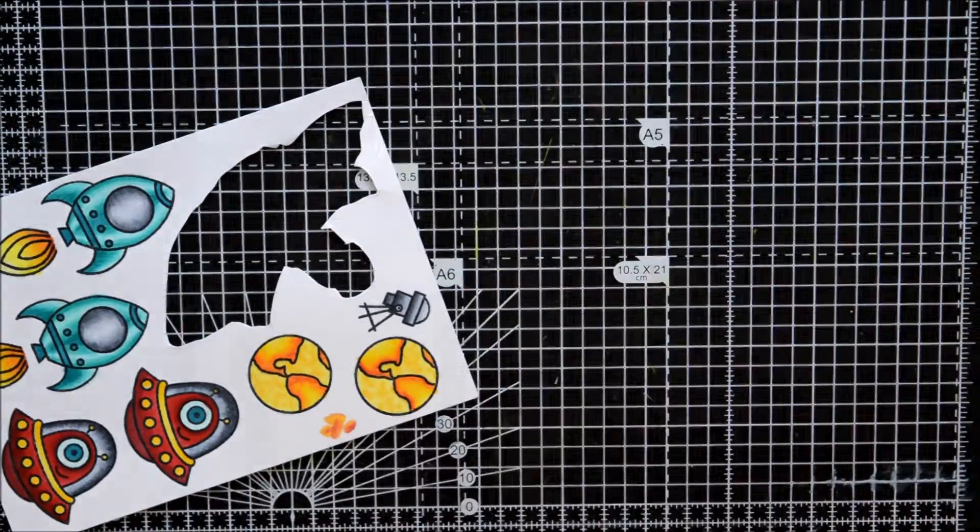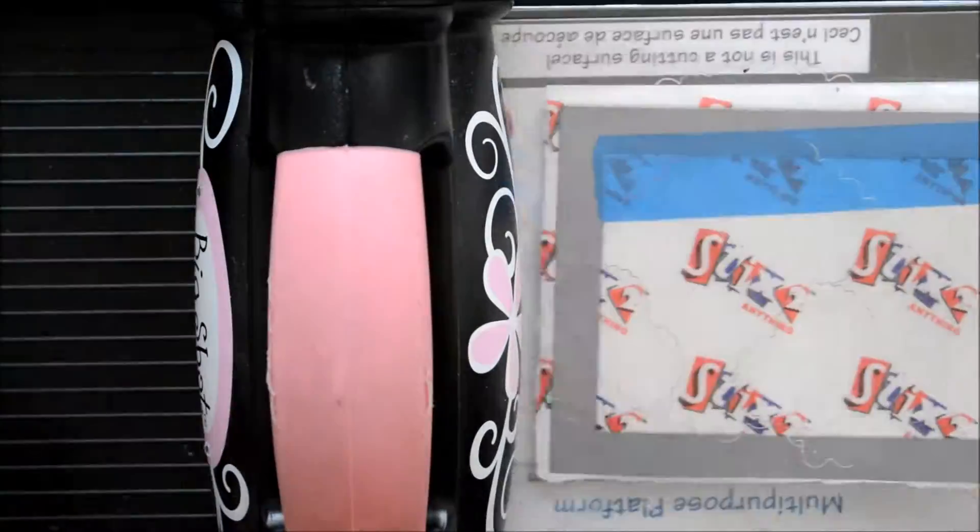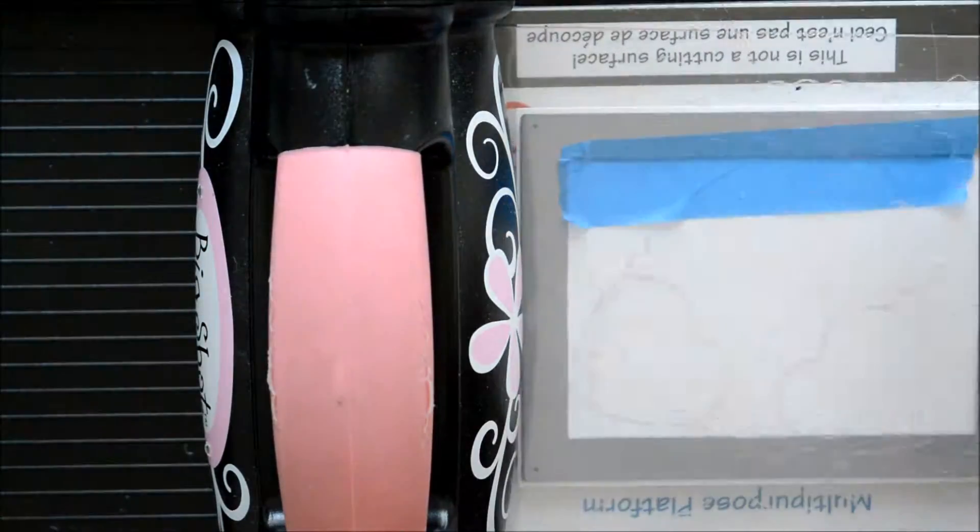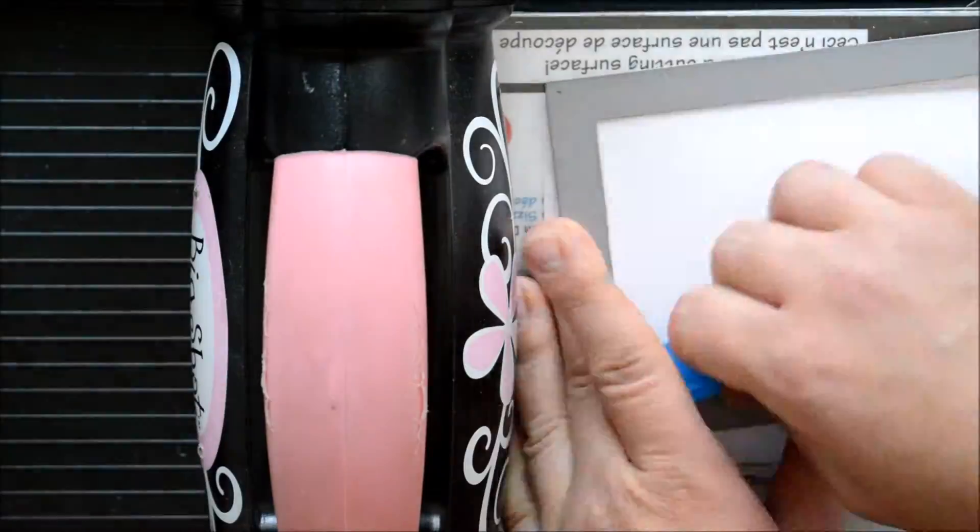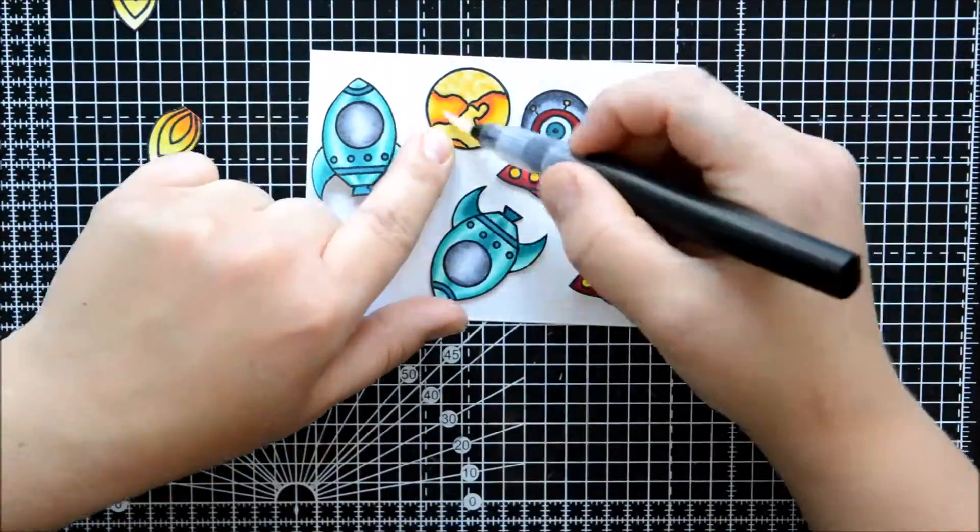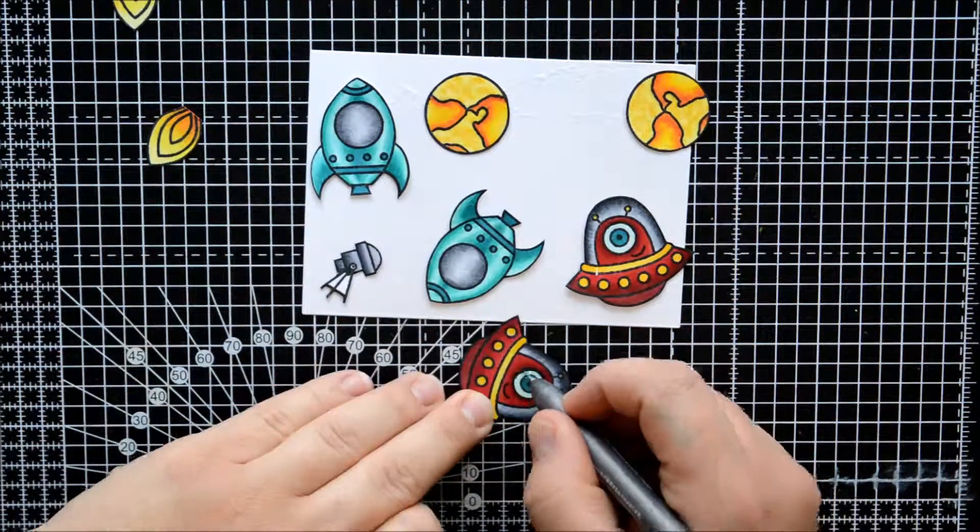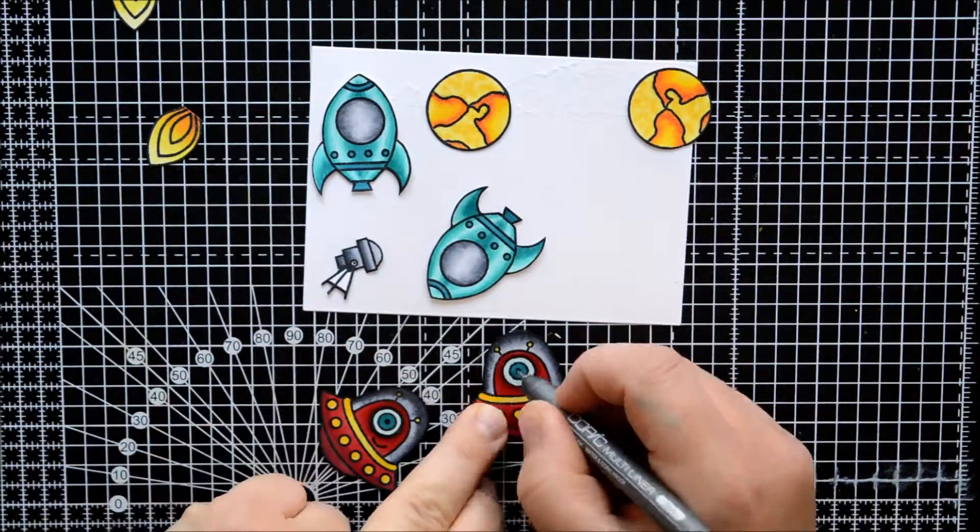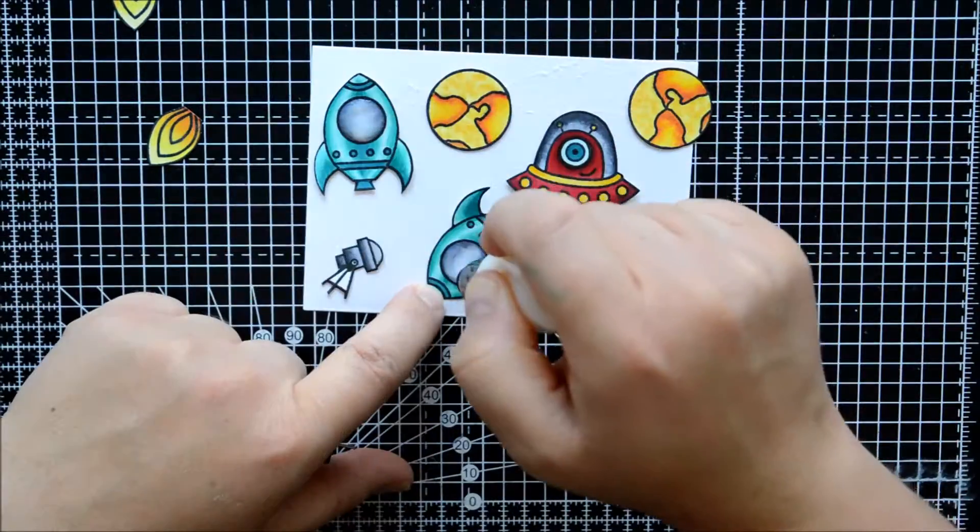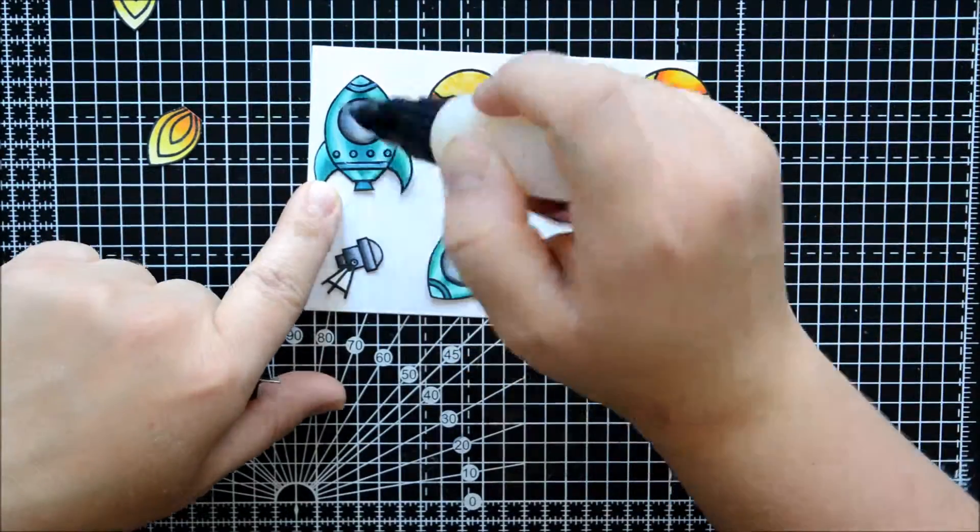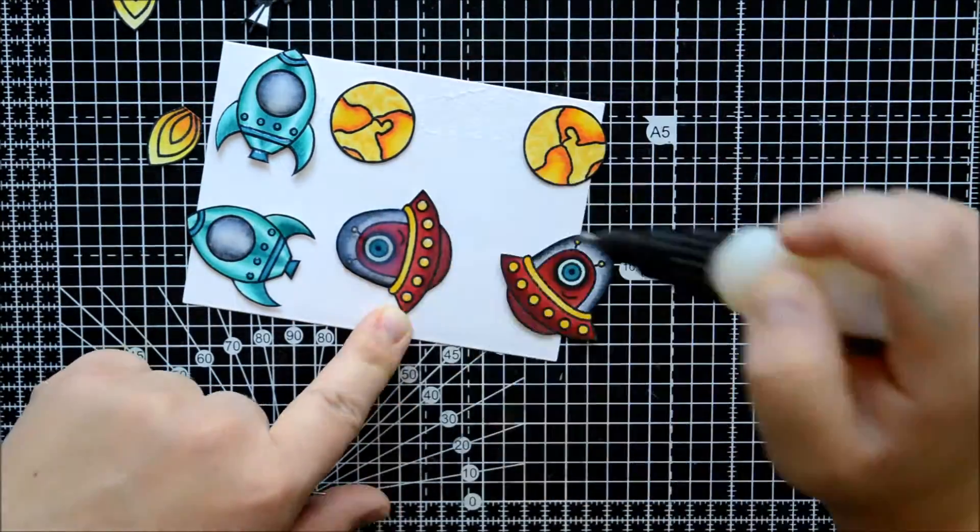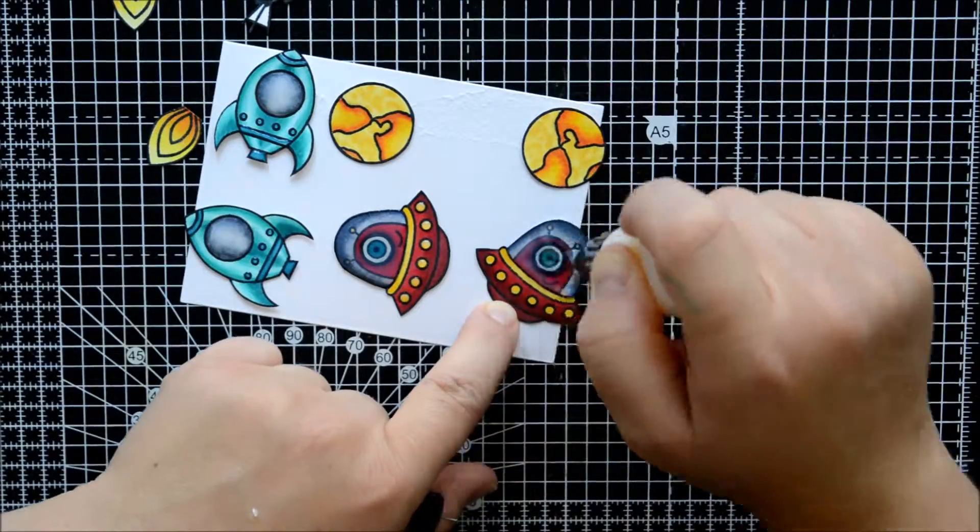Once I'm done with that, I will do all the fussy cutting off camera because that takes forever. Then I took a piece of Neenah Solar White card and I cut off my frame, and then I did the same thing with some double-sided foam tape. I put some Wink of Stella and used my black Copic Multiliner to go over the lines.